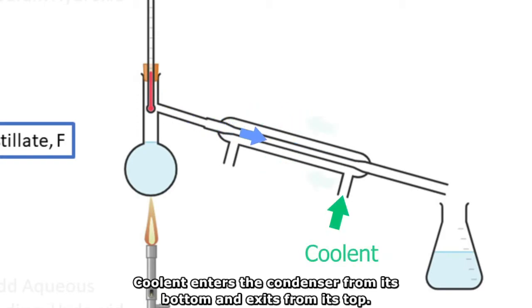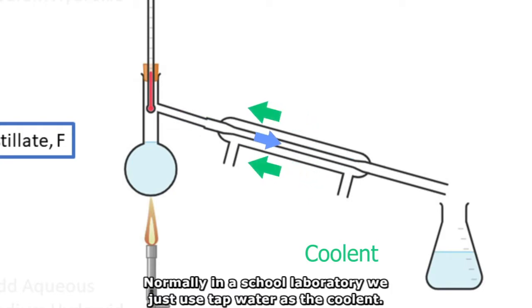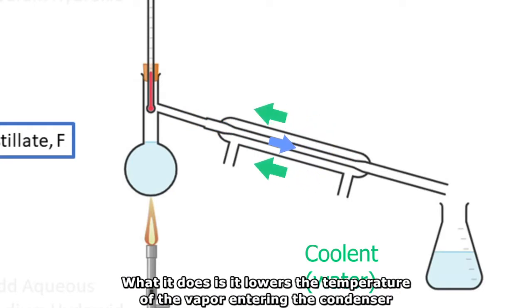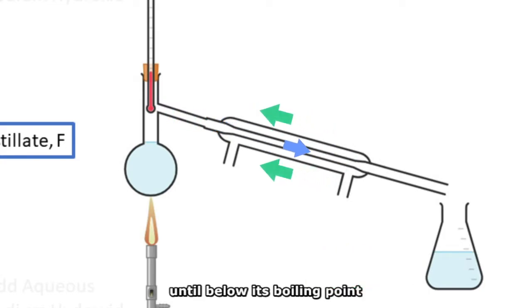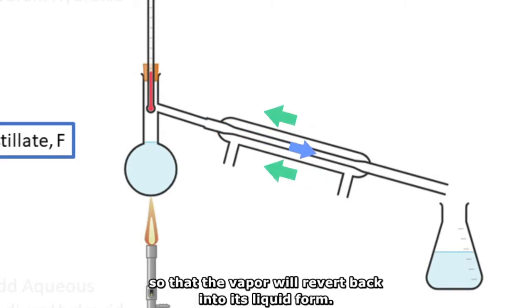Coolant enters the condenser from its bottom and exits from its top. Normally in a school laboratory, we just use tap water as the coolant. What it does is that it lowers the temperature of the vapor entering the condenser until below its boiling point, so that the vapor will revert back into its liquid form.